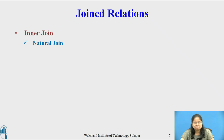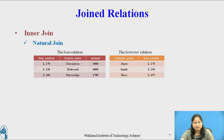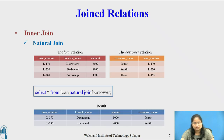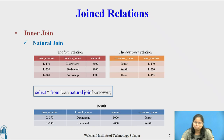Consider first the natural join of relations loan and borrower. The query is: SELECT * FROM loan NATURAL JOIN borrower. The natural join operation requires that for a loan tuple and a borrower tuple to match, their loan number values must be equal. The attributes of the result consist of the attributes of the left-hand side relation followed by attributes of the right-hand side relation — loan number, branch name, and amount from loan, and customer name from borrower.